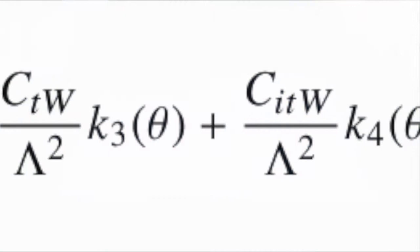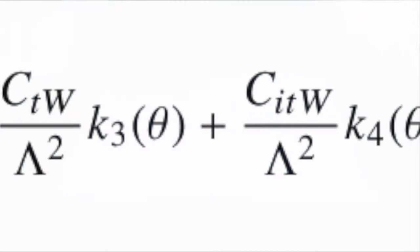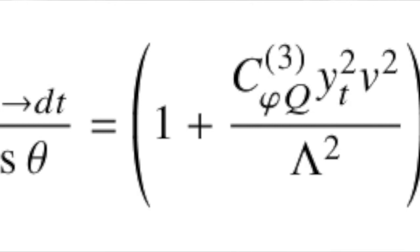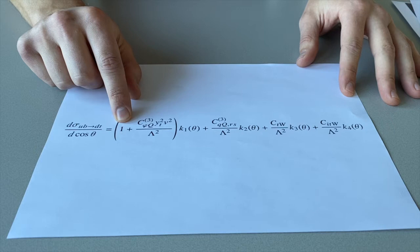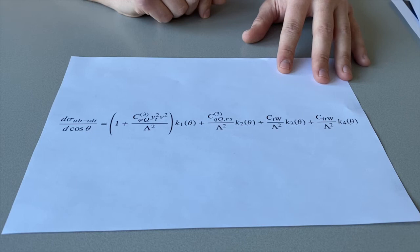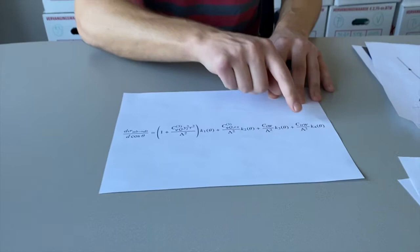With the mathematical equations we dive a little bit into the technicalities, but that's what we do here. And basically, this one is what we call the standard model, and then we have all these extra terms. There's one particular process that can cause the difference between matter and antimatter, and that's this one here—the CITW.